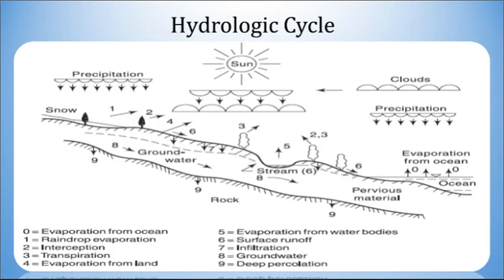Let us understand the hydrologic cycle. This is a schematic diagram. In many books, you will find a typical diagram like this which involves various parameters like precipitation, raindrop evaporation, interception, transpiration, evaporation from land, evaporation from water bodies, surface runoff, infiltration, groundwater, deep percolation, etc.